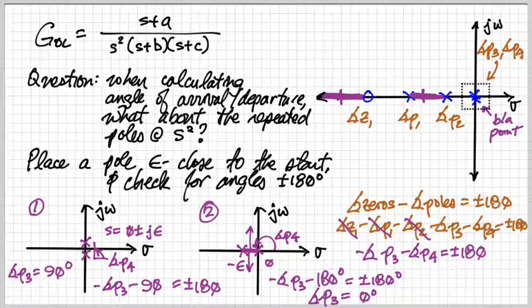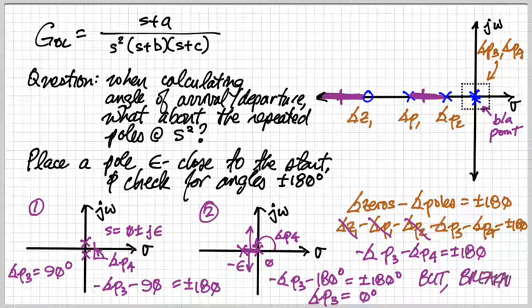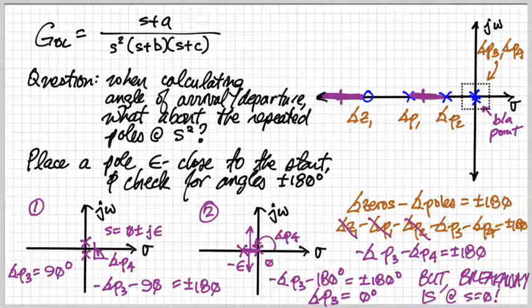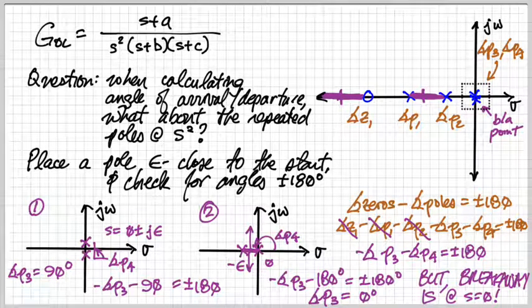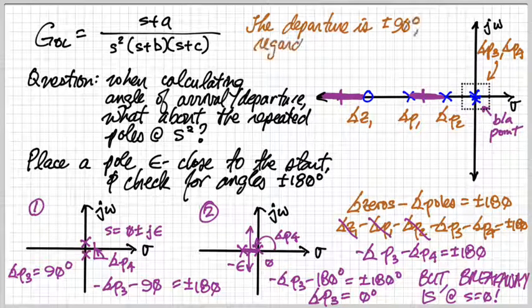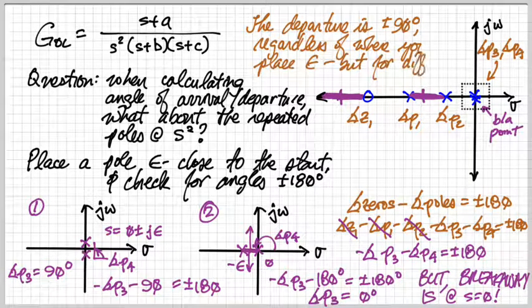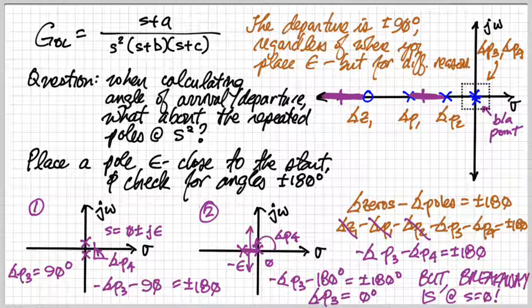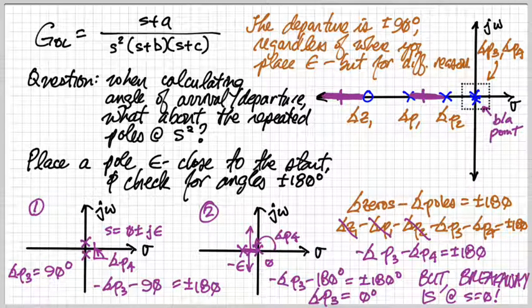So I think the last portion of this that you should think of, because of that breakaway point, we're going to see that the takeoff in these cases is plus or minus 90 degrees. So the departure that you'll see regardless of where you place epsilon is 90 degrees but it can be for different reasons.